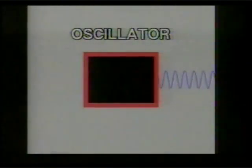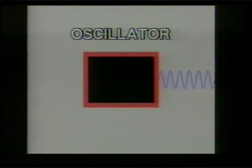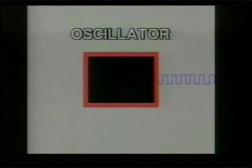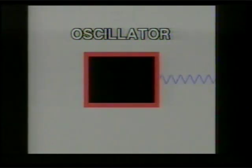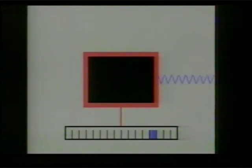The oscillator is an electrical circuit which produces regular signals. Oscillators can produce signals of different shapes, and the different shapes can produce different types of sounds. The oscillator is connected to a keyboard. The keys trigger signals of different frequencies — different musical notes.